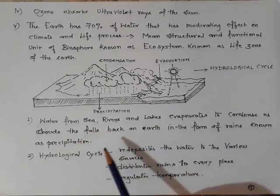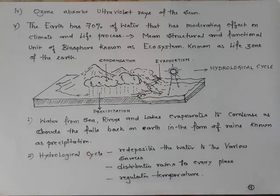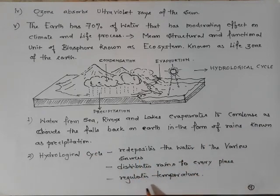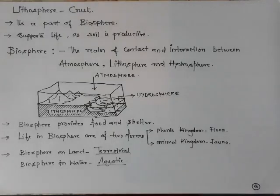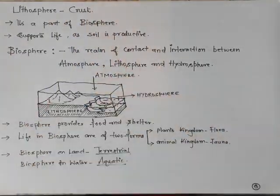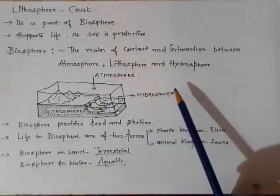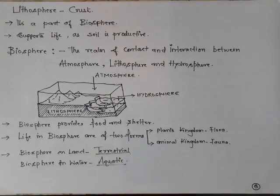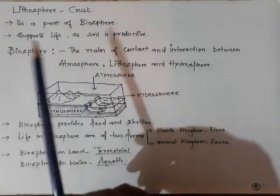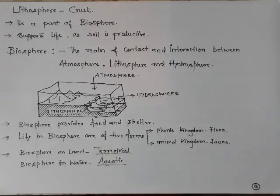Water from seas, rivers, and lakes evaporates, condenses as clouds, and falls back as precipitation. The hydrological cycle redeposits water to various sources, distributes rain to every place, and regulates temperature. The outer layer of the earth on which rainwater accumulates in lakes, rivers, and oceans is known as the lithosphere or crust, which is part of the biosphere. The biosphere is the combination of atmosphere, hydrosphere, and lithosphere. The lithosphere is known as the productive layer because it has fertile soil that supports the growth of plants and trees.